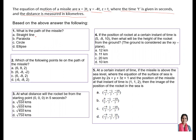First: what is the path of the missile — straight line, parabola, circle, or ellipse? Second: which of the following points lie on the path of the missile: (6, 8, 2), (6, -8, -2), (6, -8, 2), or (-6, -8, 2)? Third: at what distance will the rocket be from the starting point (0, 0, 0) in five seconds — √550, √650 km, √450 km, or √750 km?